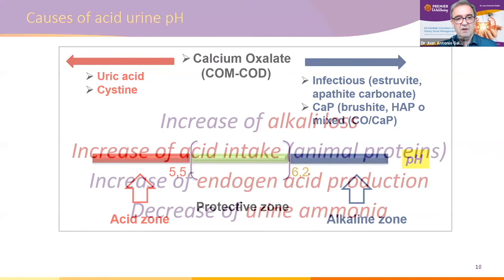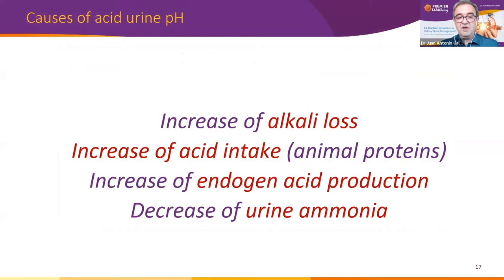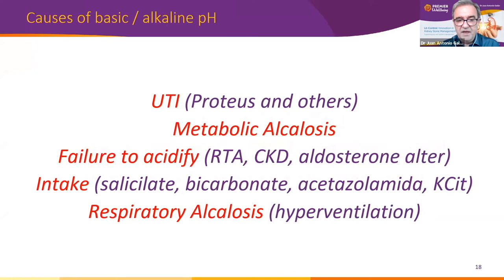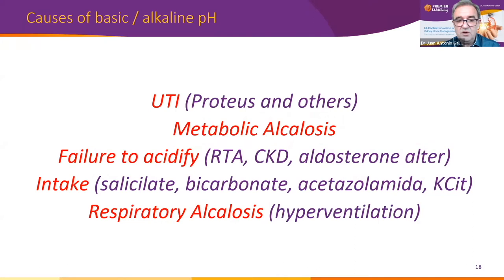Theoretically, urine pH can decrease due to an increase of acid intake, an increase of endogenous acid production, an increase of alkaline loss, or a decrease of urinary ammonia. On the other hand, alkaline pH can be due to acid-base alterations, urinary tract infections, conditions leading to failure to acidify urine like renal tubular acidosis, chronic kidney disease, and aldosterone alteration — and also secondary to increased intake of drugs such as salicylate, acetazolamide, bicarbonate, and potassium citrate.